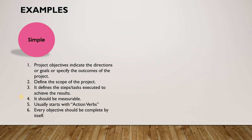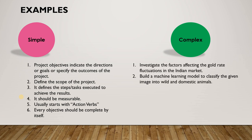Let's look at slightly higher-level examples, maybe at engineering level, and how to formulate project objectives. The first one is: 'investigate the factors affecting the gold rate fluctuations in the Indian market.' The second one is: 'build a machine learning model to classify the given image into wild and domestic animals.' Here, 'investigate' and 'build' are action verbs. By the end of the project, you should be able to say how accurately you can classify images into wild and domestic animals — that is a measurable outcome. These examples will help you formulate project objectives.